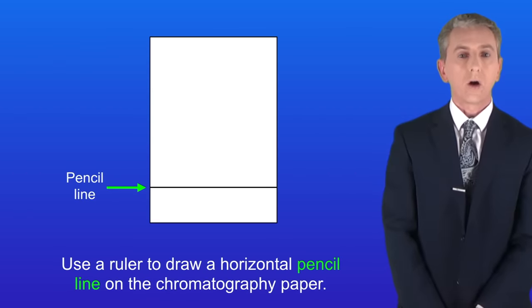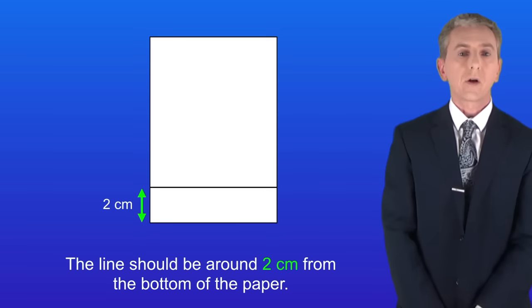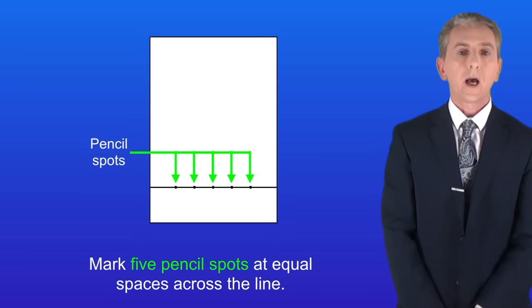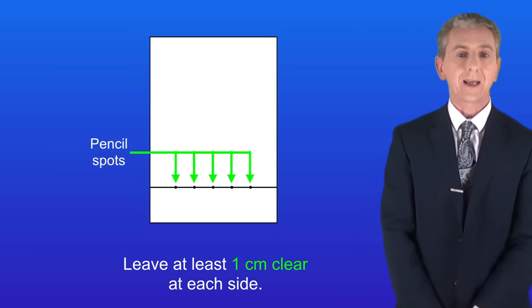First we use a ruler to draw a horizontal pencil line on the chromatography paper. The line should be around two centimeters from the bottom of the paper. We now mark five pencil spots at equal spaces across the line. We need to leave at least one centimeter clear at each side.